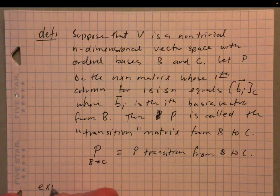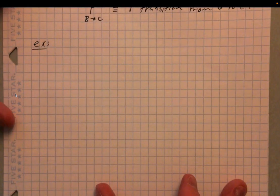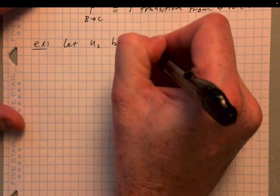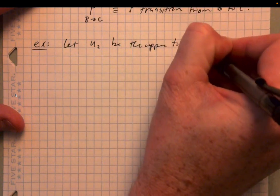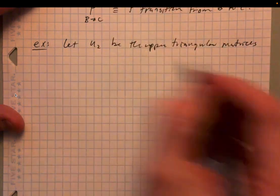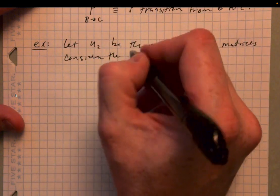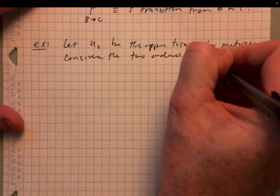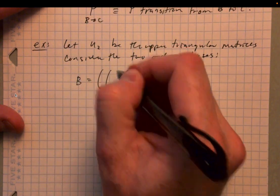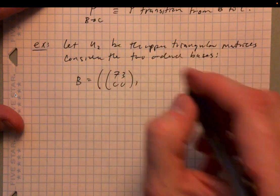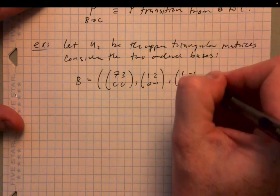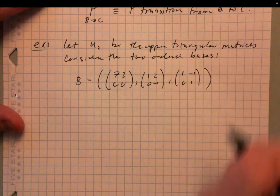Let's see an example. We're going to let U2 be the upper triangular matrices and consider the following two ordered bases. The first one, B, is: {[7,3;0,0], [1,2;0,-1], [1,-1;0,1]}. The second one, C, is the more standard ordered basis: {[1,0;0,0], [0,1;0,0], [0,0;0,1]}. C is the standard one; B is something else. Both are bases and can be used to represent any upper triangular matrix.